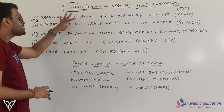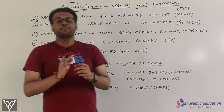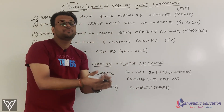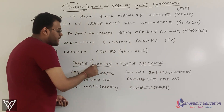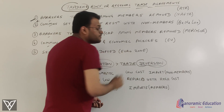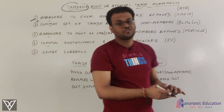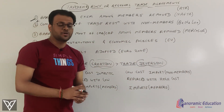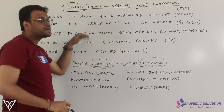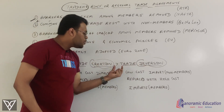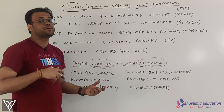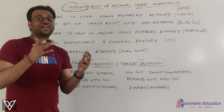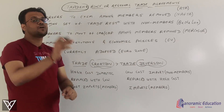So those are the five different models of trading blocks. If you enter into such agreements, there will be some benefits and some costs — every coin has two sides. If the trade creation due to such agreements is more than the trade diversion, then it is beneficial and we should enter into such agreements. However, if that is not the case, it does not make sense.